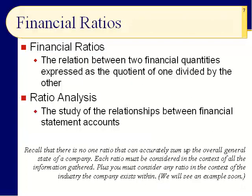Slide number seven: let's regroup and review financial ratios. A financial ratio is a very simple statistic — you just take two financial quantities and divide one by the other. That's ratio analysis: the study of the relationships between financial statement accounts. Please recall that there is no one ratio that can accurately sum up the overall general state of a company. Each ratio must be considered in the context of all the information gathered, plus the industry that the company exists within — you've got to look at competitors and the industry as a whole.